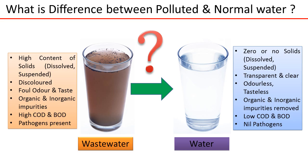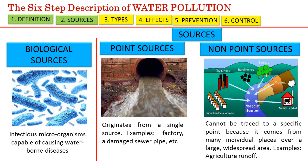The most important indicators are a high amount of biochemical oxygen demand, otherwise known as BOD, and chemical oxygen demand, otherwise known as COD. The sources of water pollution are many and range from simple physical sources such as physical debris and infectious microorganisms capable of causing waterborne diseases. While a single drain releasing polluted water is a point source and easily traced, it is very difficult to identify the source when there are non-point sources contributing to the pollution.